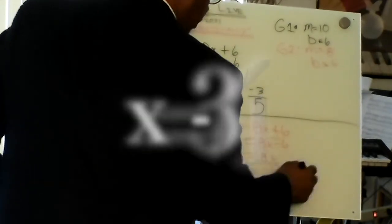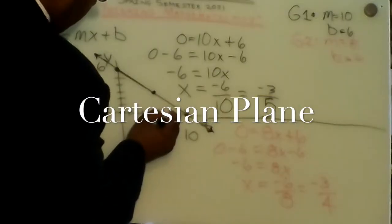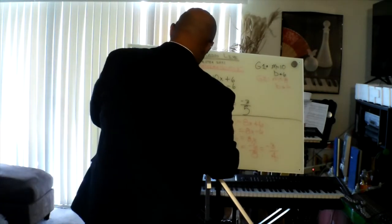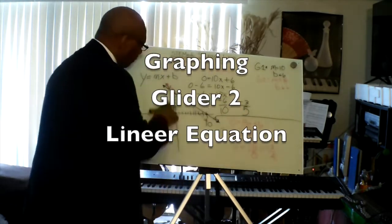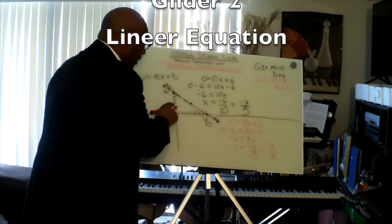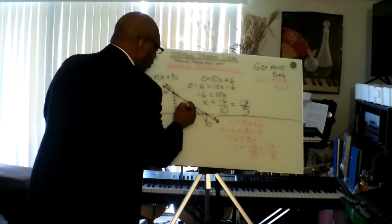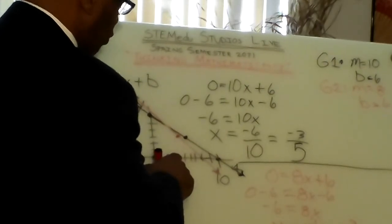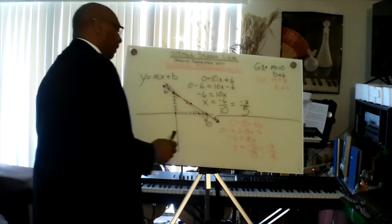x equals negative 3 over 4. Let's see what it looks like on the Cartesian plane. We have 6 and 8. Now let's count down our rise, which is negative 3 — 1, 2, 3 — and count over our run, which is 4 — 1, 2, 3, 4. Count down another 3 and over 4, and see that it lands directly on 8.